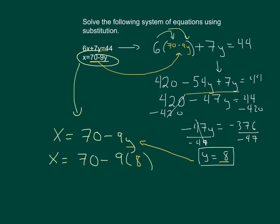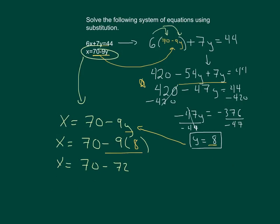So we substituted once over here to get y by itself. And now we have to plug back in to figure out what x is. So negative 9 times 8 is a negative 72. So we're going to get x equals 70 minus 72. And that's going to give us 70 minus 72 is x is equal to negative 2. So how do we write this answer?